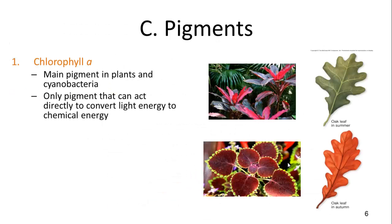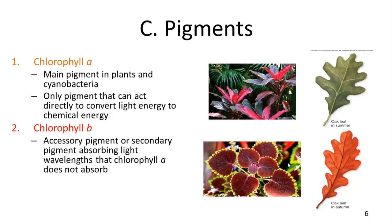Some important pigments in photosynthesis include chlorophyll a, the main pigment in plants and cyanobacteria, which gives the green color. It is the only pigment that can directly use light energy and convert it to chemical energy to excite electrons.